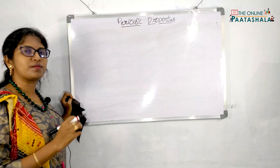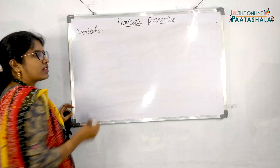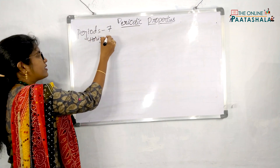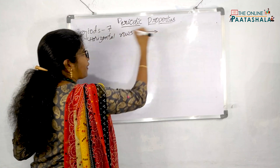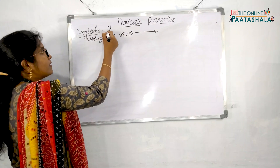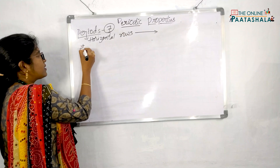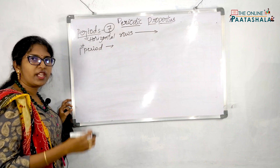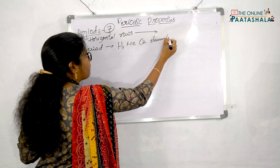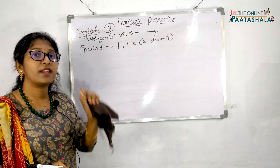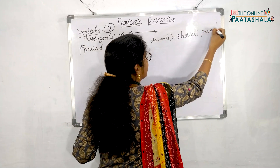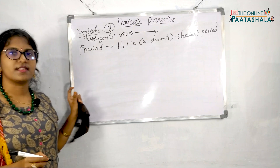Till now we have learned about groups. Now we will go into periods. There are 7 periods total. The 1st period contains only 2 elements — hydrogen and helium — and is called the shortest period of the whole periodic table.